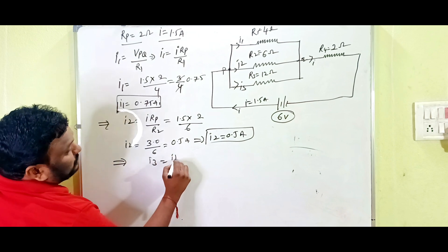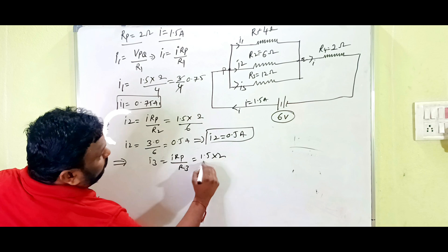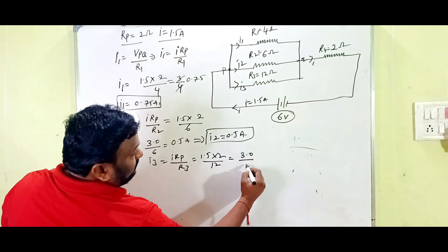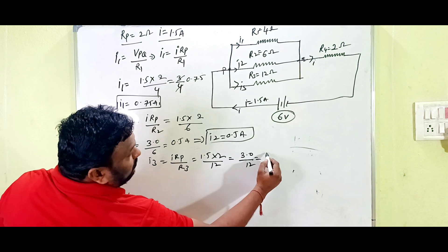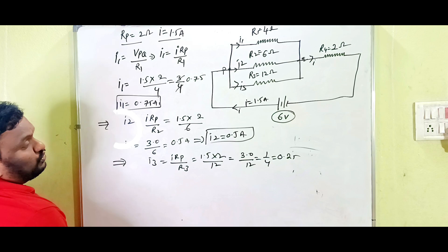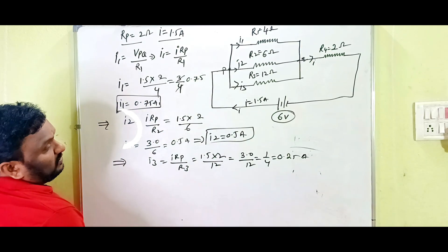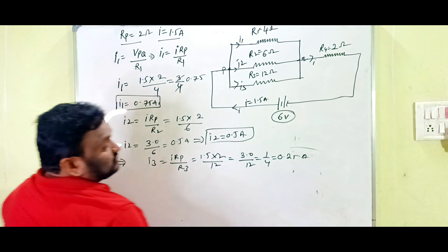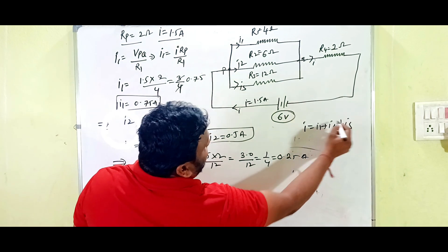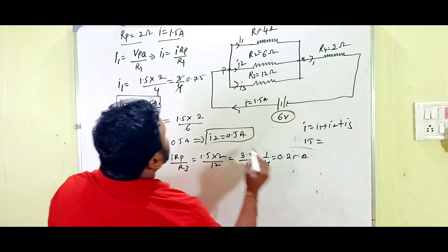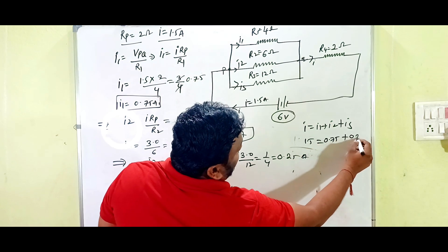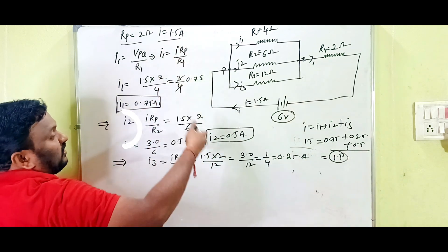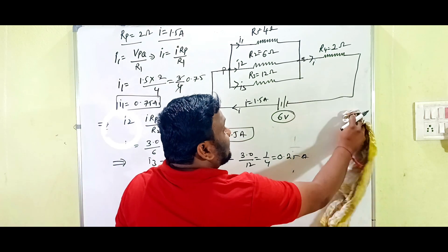I3 = (I × Rp) / R3 = (1.5 × 2) / 12 = 3.0 / 12 = 0.25 amperes. As a verification: I1 + I2 + I3 = 0.75 + 0.5 + 0.25 = 1.5 amperes, which equals our total current I. So the values are correct.